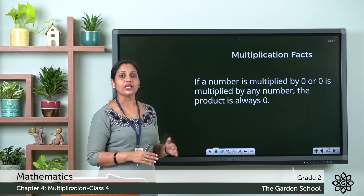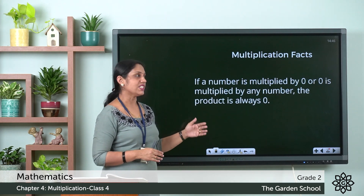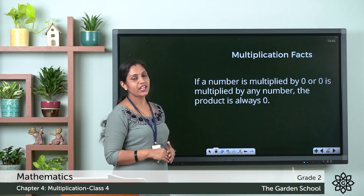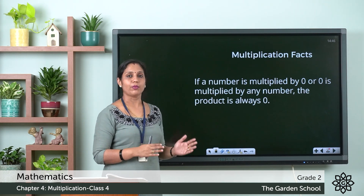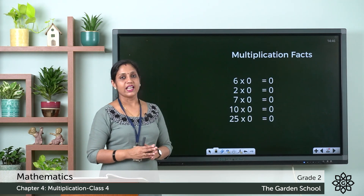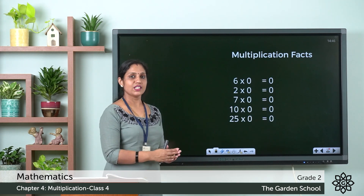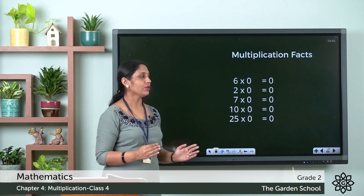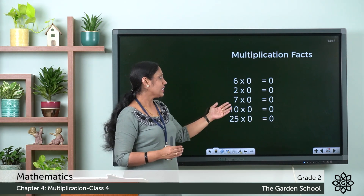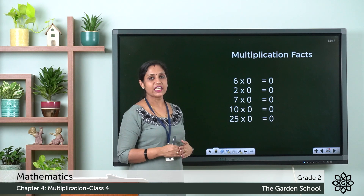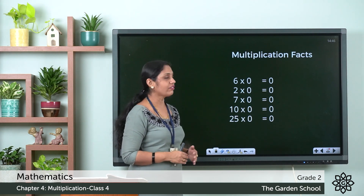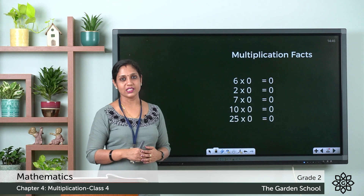We can say that if any number is multiplied by 0, or 0 is multiplied by any number, the product is 0. For example: 2 × 0 = 0, 7 × 0 = 0, 10 × 0 = 0, and 25 × 0 = 0.